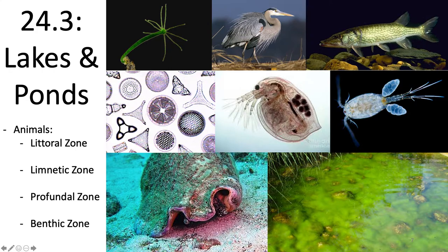In the benthic zone you can also have periphyton or aufwuchs — spelled A-U-F-W-U-C-H-S — which are organisms attached to or moving on submerged substrate but not penetrating it. Examples include algae, diatoms, cyanobacteria, water moss, and sponges. Those are all organisms you can find in the benthic zone.